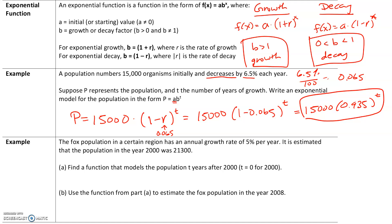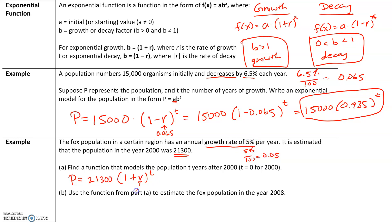The fox population in a certain region has an annual growth rate of 5% per year. It is estimated that the population in 2000 was 21,300. First, we want to write a function for t years after 2000. So in 2000, t = 0. We have exponential growth, so the function is f(t) = 21,300 × (1 + r)^t. Our rate of growth is 5%, which is 0.05. So the population is modeled by 21,300 × 1.05^t, because 1 + 0.05 = 1.05.